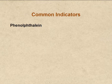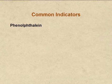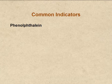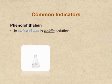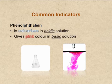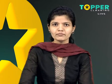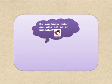The last common indicator is phenolphthalein. Phenolphthalein is a colorless organic compound and is a weak acid. It remains colorless in acidic solution. In basic solution, phenolphthalein ions are formed which are pink in color. Hence, phenolphthalein gives a pink color in basic solution. Thus, acidity and basicity can be checked with the help of these three common indicators.